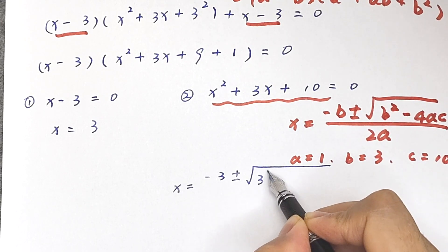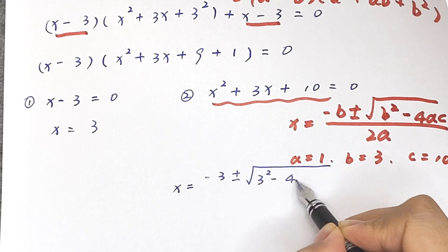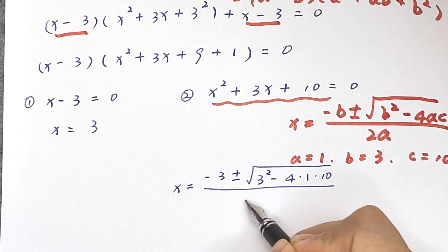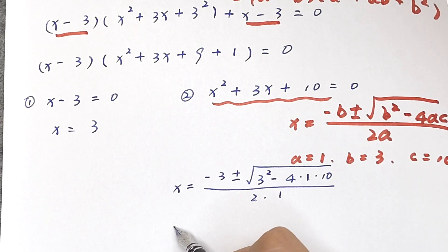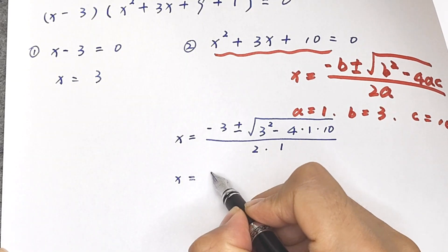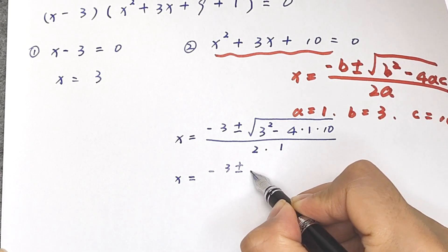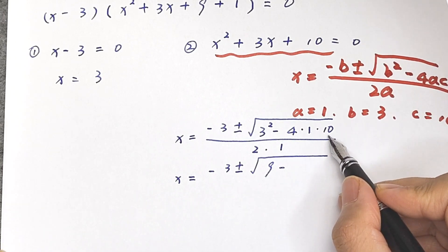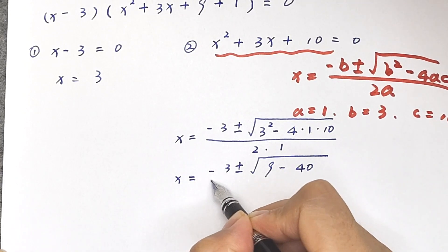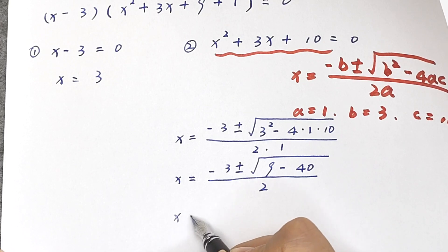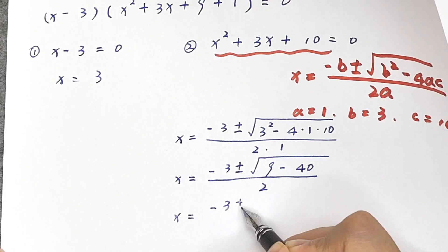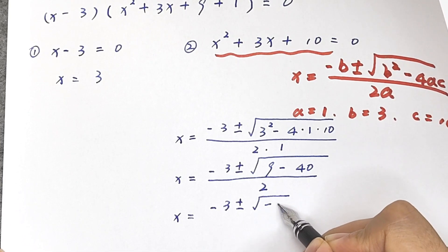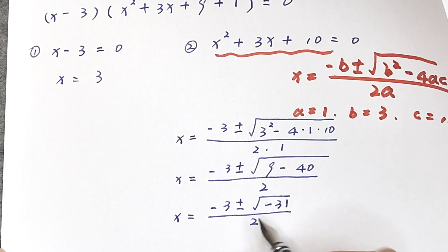So x equals negative 3 plus or minus square root of 3 squared minus 4 times 1 times 10, divided by 2 times 1. That gives x equals negative 3 plus or minus square root of 9 minus 40, over 2, which is negative 3 plus or minus square root of negative 31, over 2.